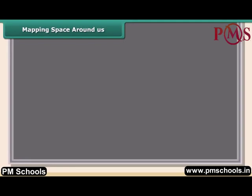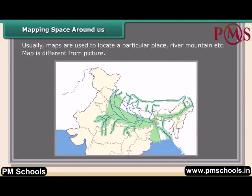Mapping space around us: maps are usually used to locate a particular place such as a river or mountain. A map is different from a picture. This map is drawn by Radha, showing the route from her house to her uncle's house.